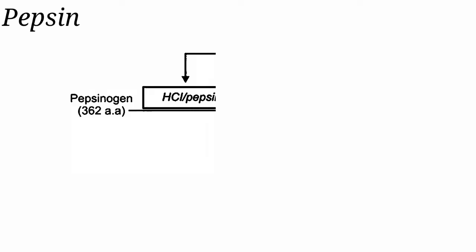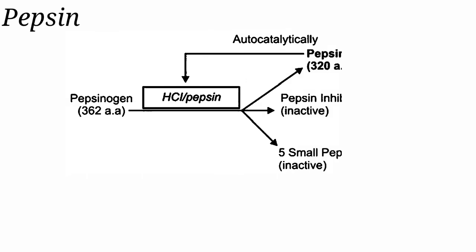Pepsinogen is hydrolyzed in the stomach with the help of hydrochloric acid or pepsin itself to form active pepsin. In the process of activation, an active peptide called pepsin inhibitor and 5 small peptides are liberated. The optimum pH for pepsin is 1.6 to 2.5. Hydrochloric acid maintains the gastric pH at about 1 to 2 and ensures maximum pepsin activity.